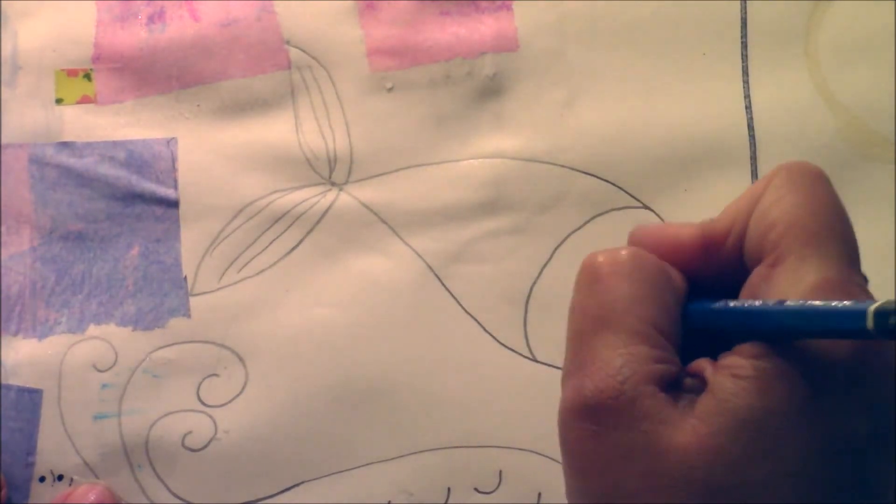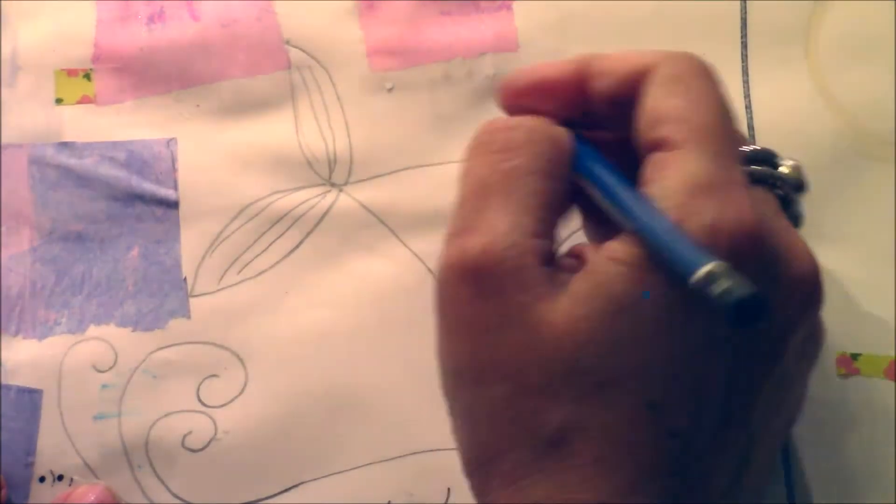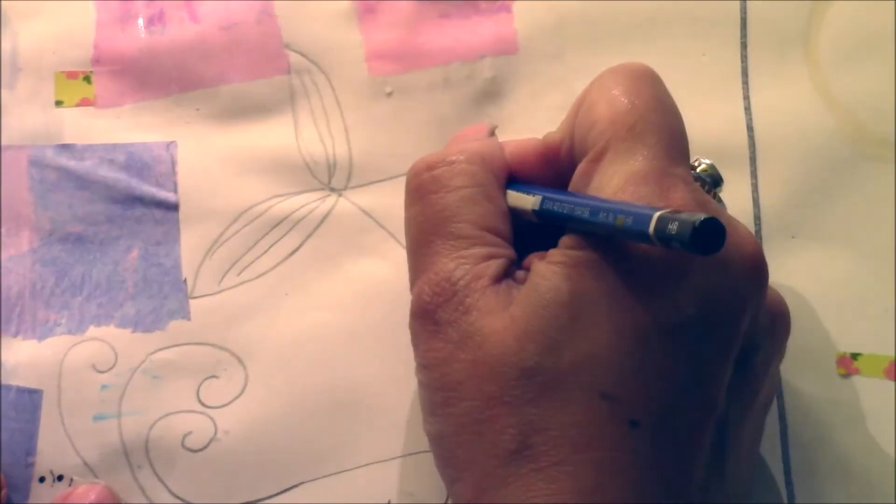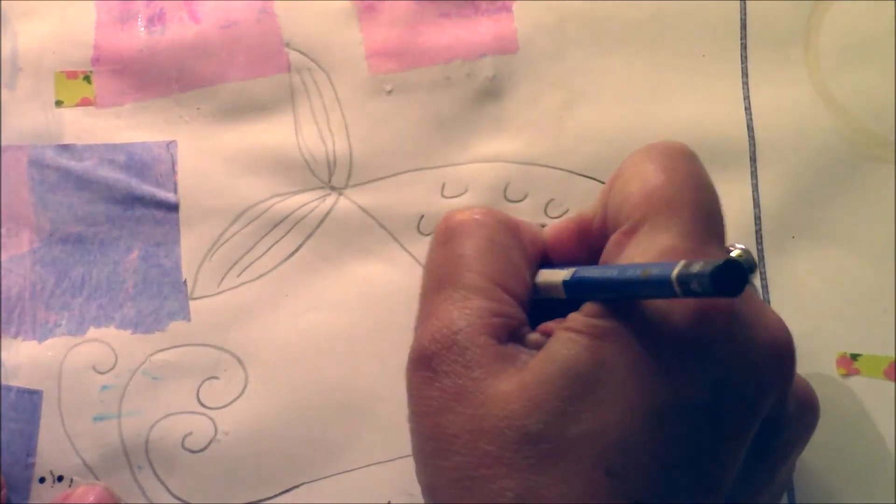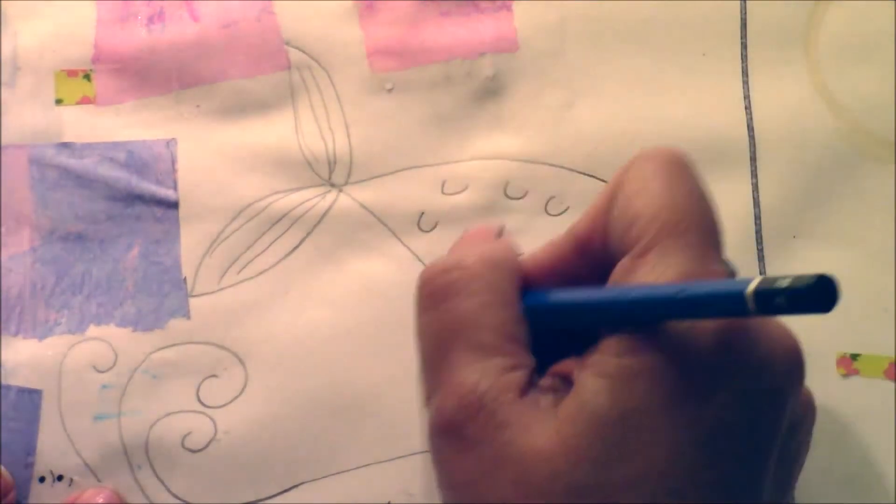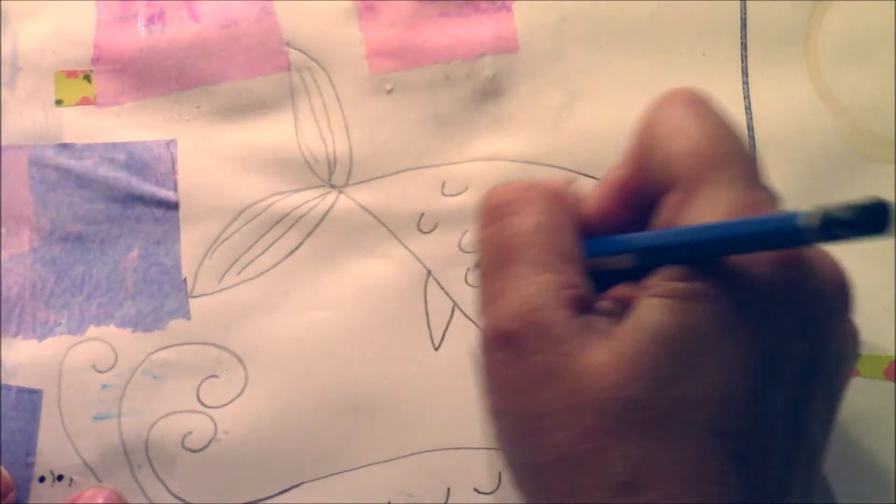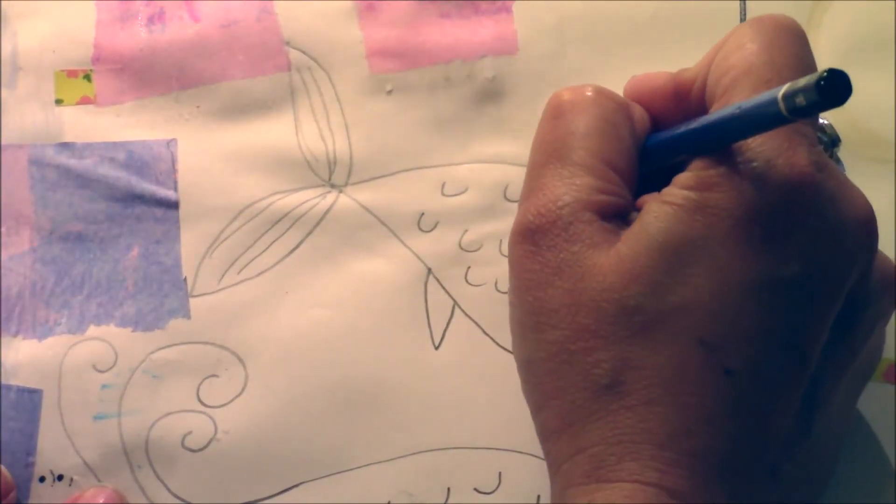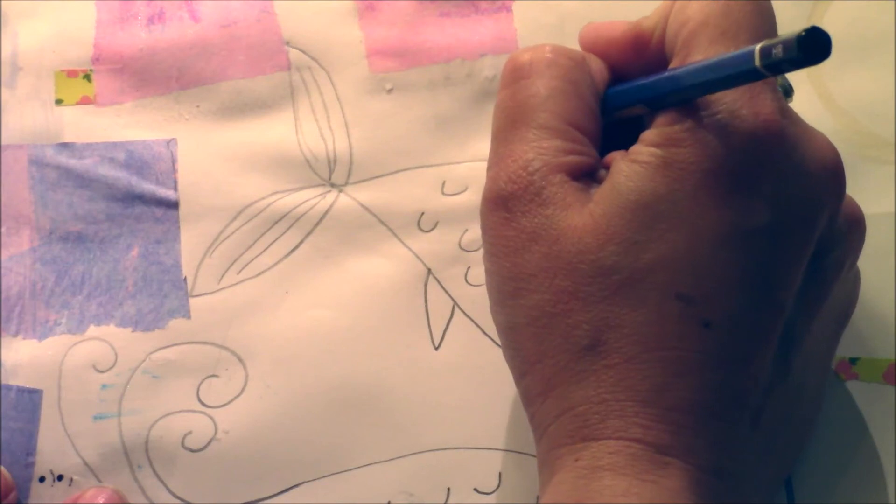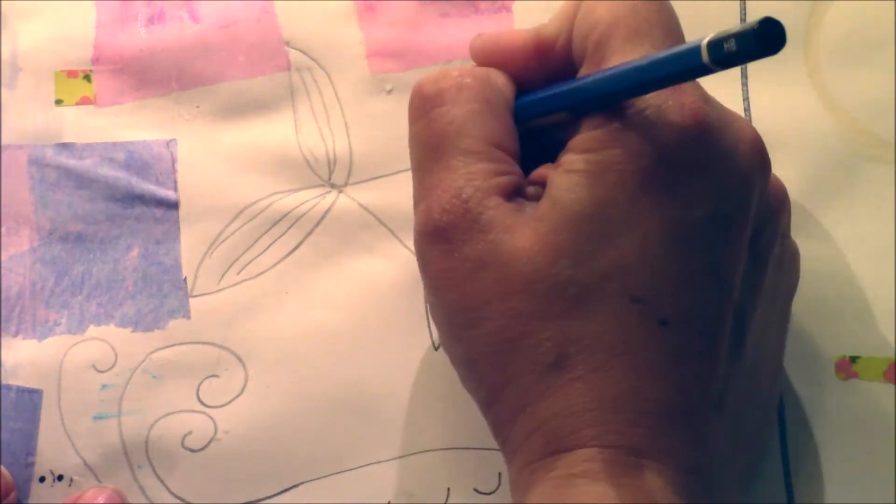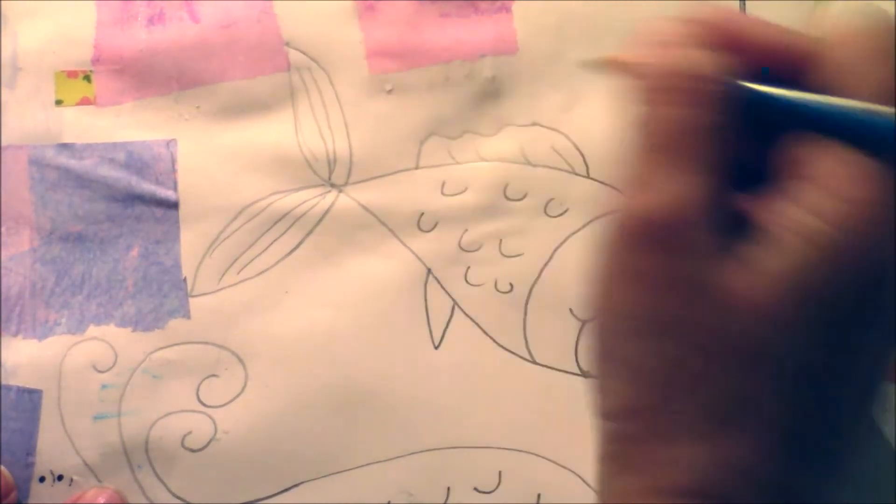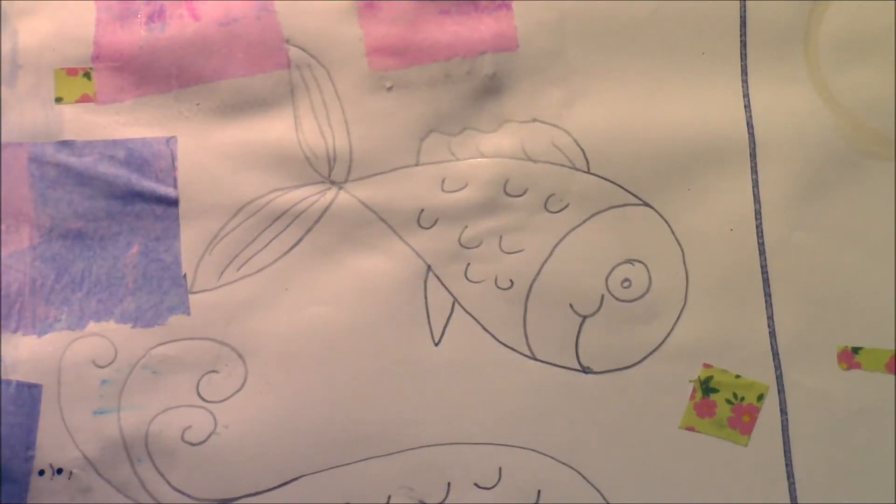And then you could do scales. You could add another fin there, and another fin here. You could do a wavy fin, kind of like that. So that's how I do my fishies.